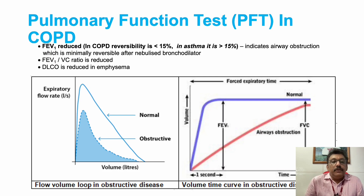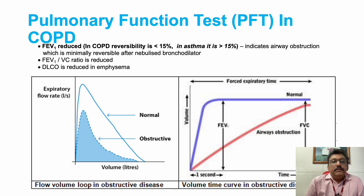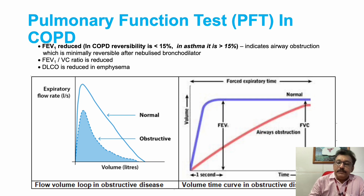The most important pulmonary function test is FEV1. FEV1 is reduced in both COPD and asthma, but the key difference is reversibility: after nebulization, if FEV1 improves more than 15%, it is asthma; if less than 15%, it indicates an irreversible condition — COPD. This is the single most important investigation to differentiate asthma from COPD. Clinically, asthma is intermittent with normal periods between attacks, while COPD patients have symptoms throughout the year and are predominantly smokers; asthma often starts from a younger age.